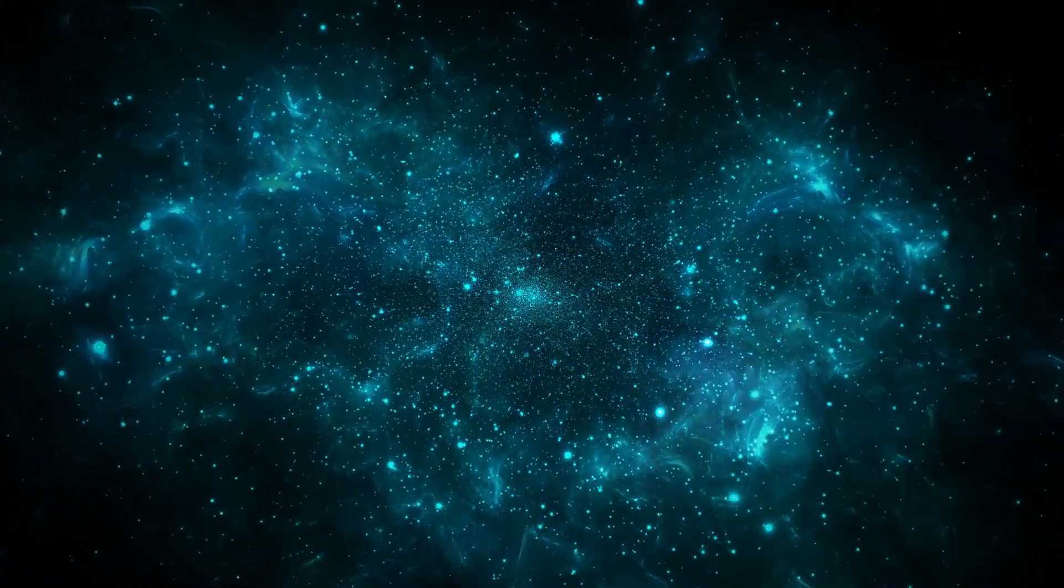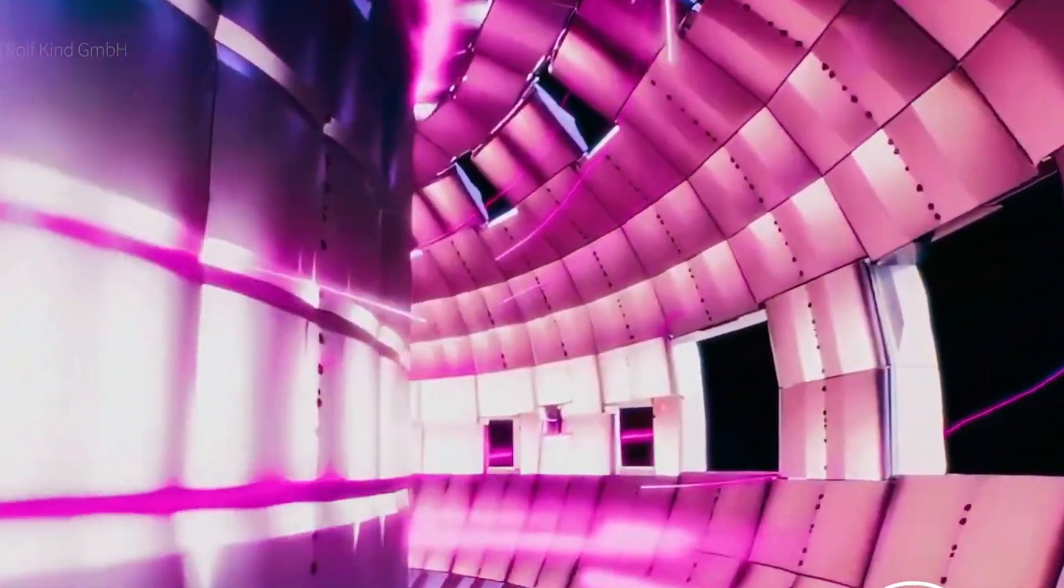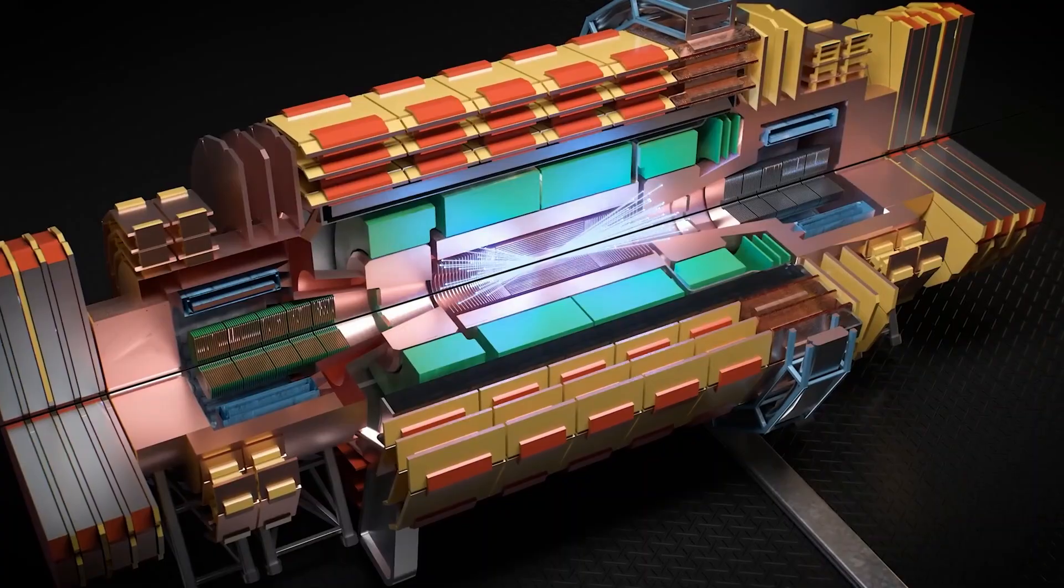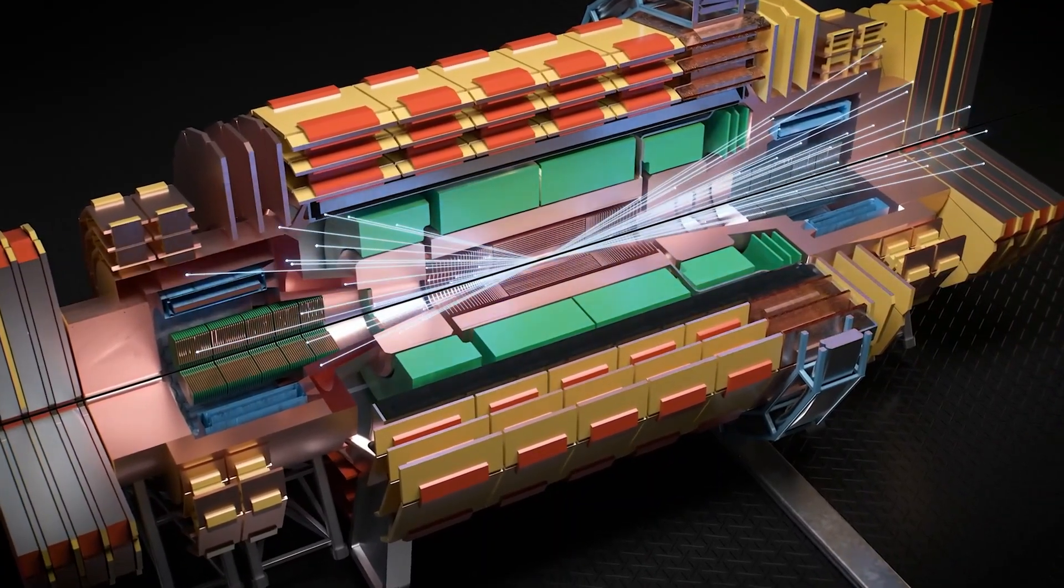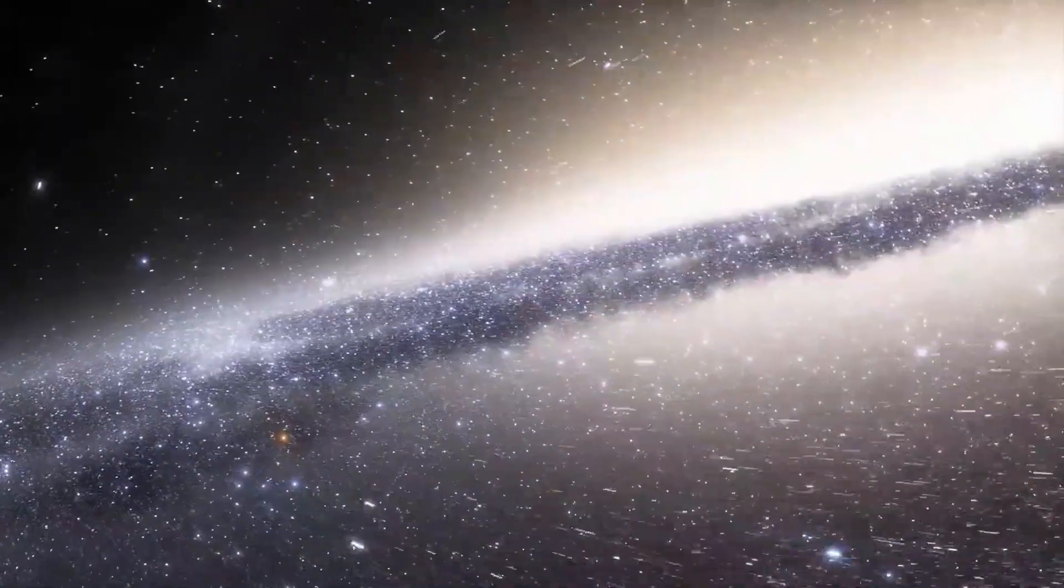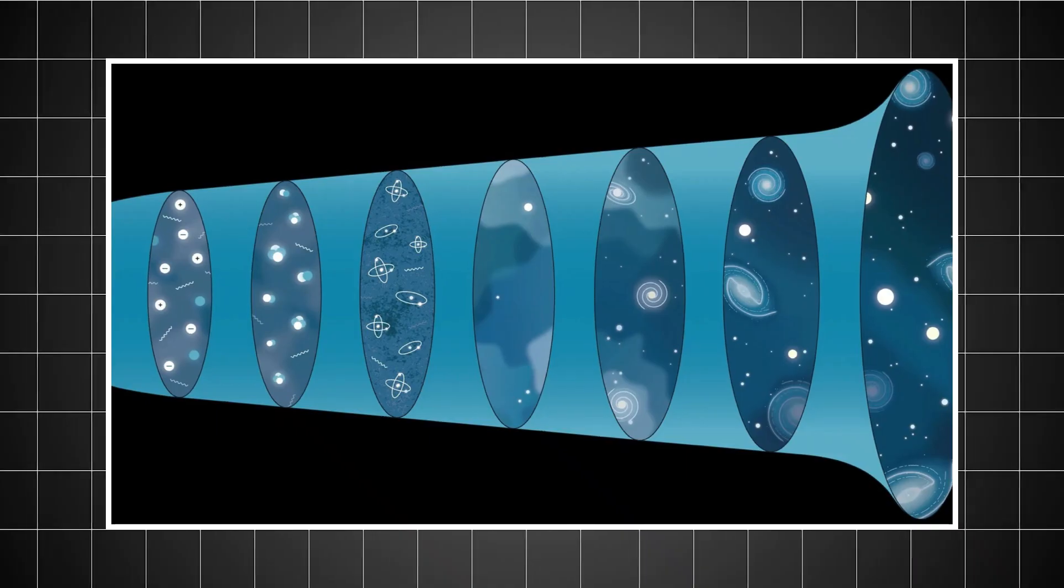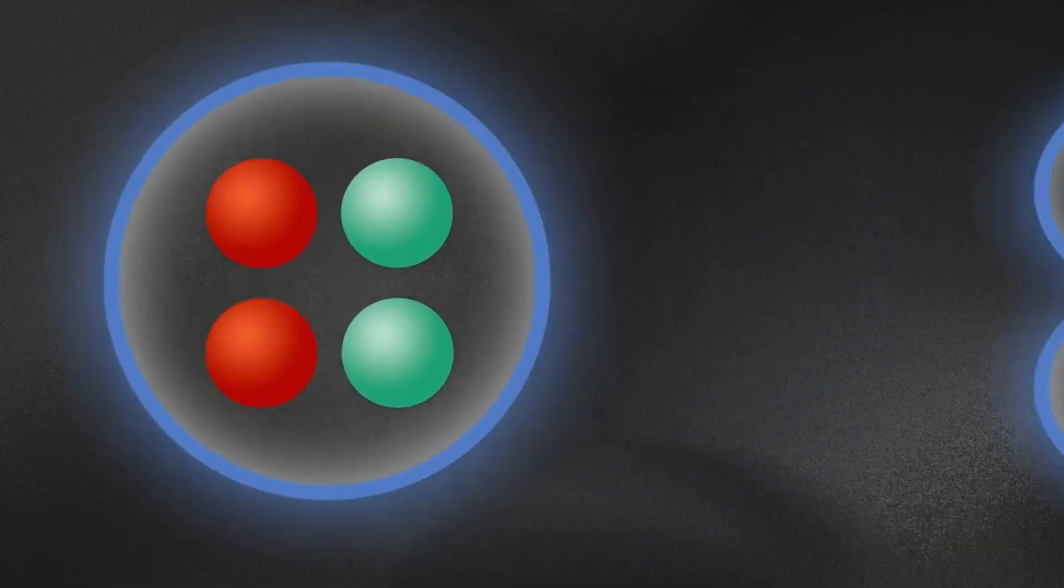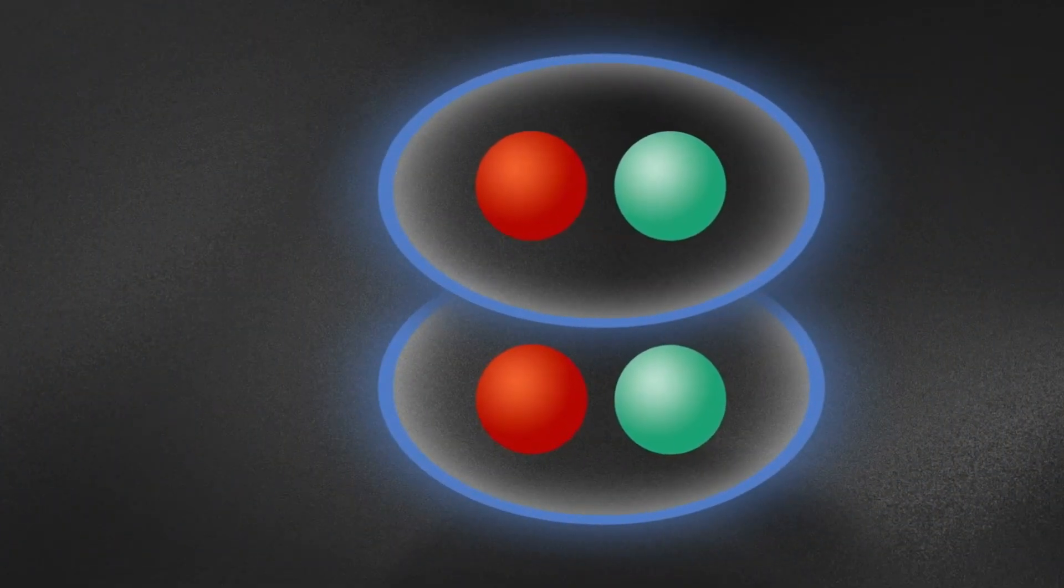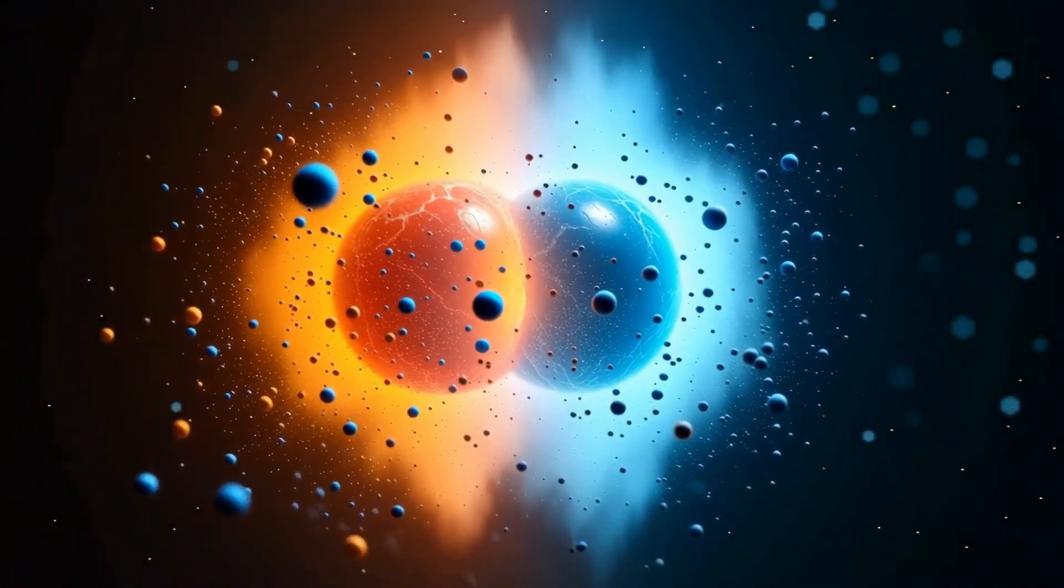Yet something, something subtle, tipped the scales. Imagine flipping a coin a hundred times. You'd expect a fair split. Heads, tails, 50-50. Now imagine that, somehow, tails lands just 5% more often. Barely noticeable, right? Except that tiny bias just decided whether the universe would exist or not. That's exactly what happened in the aftermath of the Big Bang. Matter won by the slimmest margin imaginable, 5%. That little nudge allowed it to survive the cosmic massacre and build everything we see today.